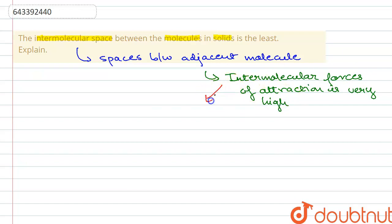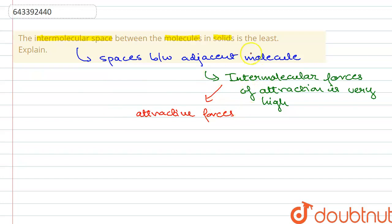Each molecule exhibits some kind of attractive force on the adjacent molecules and pulls them towards itself. Since intermolecular forces are very high in solids, the spaces between adjacent molecules decrease because the molecules are pulled towards one another.